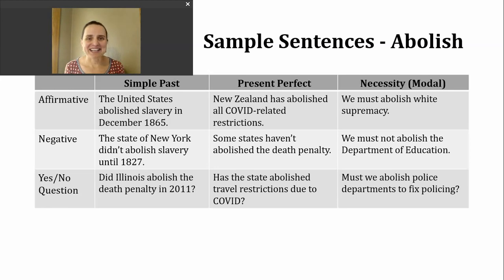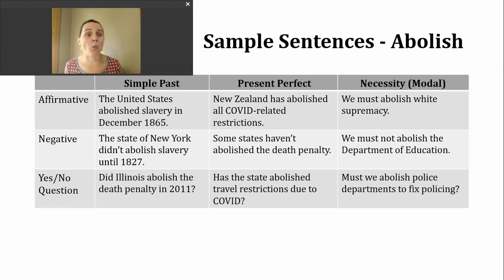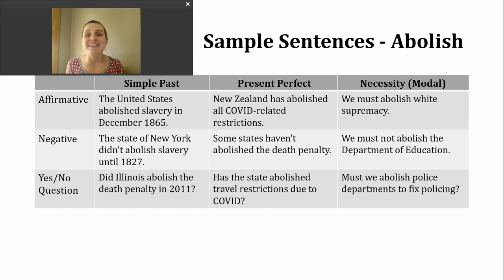Next, let's look at the present perfect. We can use this verb tense a couple of different ways. One way is to talk about an action that started in the past and continues into the present. Another way is to discuss something that happened in the past but we don't know exactly when — you might hear this referred to as the indefinite past. To make the present perfect, we need to use 'have' or 'has,' depending on our subject, and then the past participle form of the verb — which, in this case, is the same as the past tense.